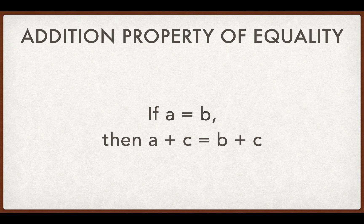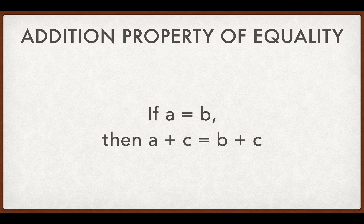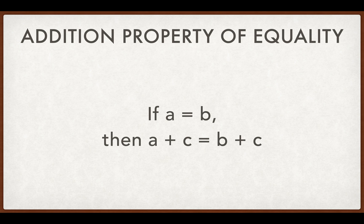Our first one is the addition property of equality. It's basically saying if two things are equal, if A equals B, then if I add the same amount, it should remain equal. So if A equals B, then A plus C is going to still be the same as B plus C because we're adding the same amount to two equal things.